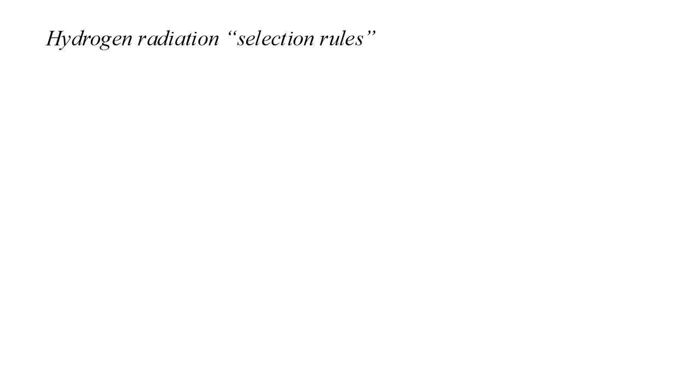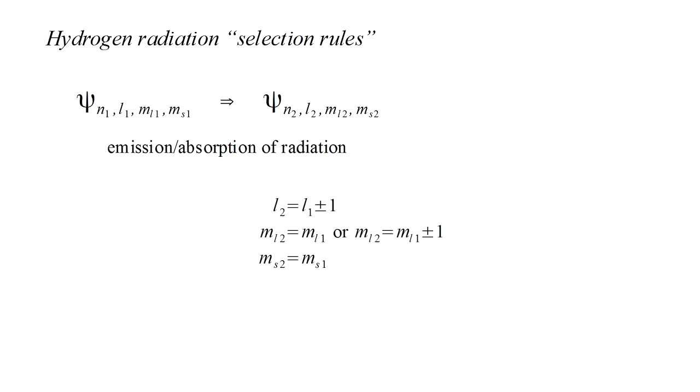Calculation of these electric dipole transition probabilities leads to the so-called selection rules for hydrogen atom radiation. An orbital with quantum numbers N1, L1, ML1, and MS1 can transition to an orbital with quantum numbers N2, L2, ML2, and MS2 only if L2 differs from L1 by plus or minus 1, ML2 equals ML1, or differs from it by plus or minus 1, and the spin quantum number does not change.